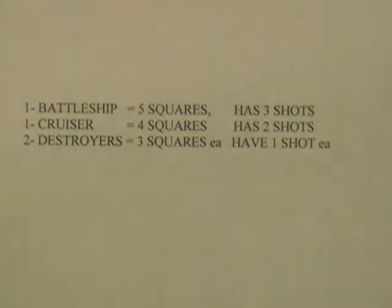You had one battleship, which had five squares, and it had three shots that it could take. You had one cruiser that had four squares, and that has two shots that it can take. And then you had two destroyers that were three squares each, and they each have one shot.